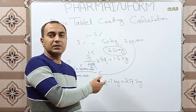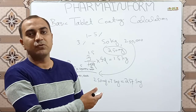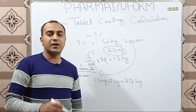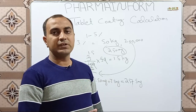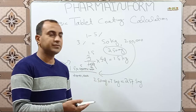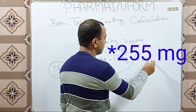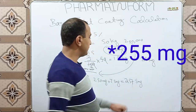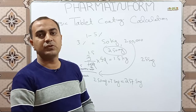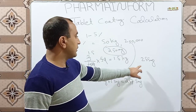In practical coating operations, loss is also observed due to dusting, so our practical weight gain will be less than theoretical weight gain. Suppose that after the coating process our average individual tablet weight gain results in a tablet weight of 255 mg, meaning we have lost 2.5 mg during the coating process due to dusting or coating material loss.